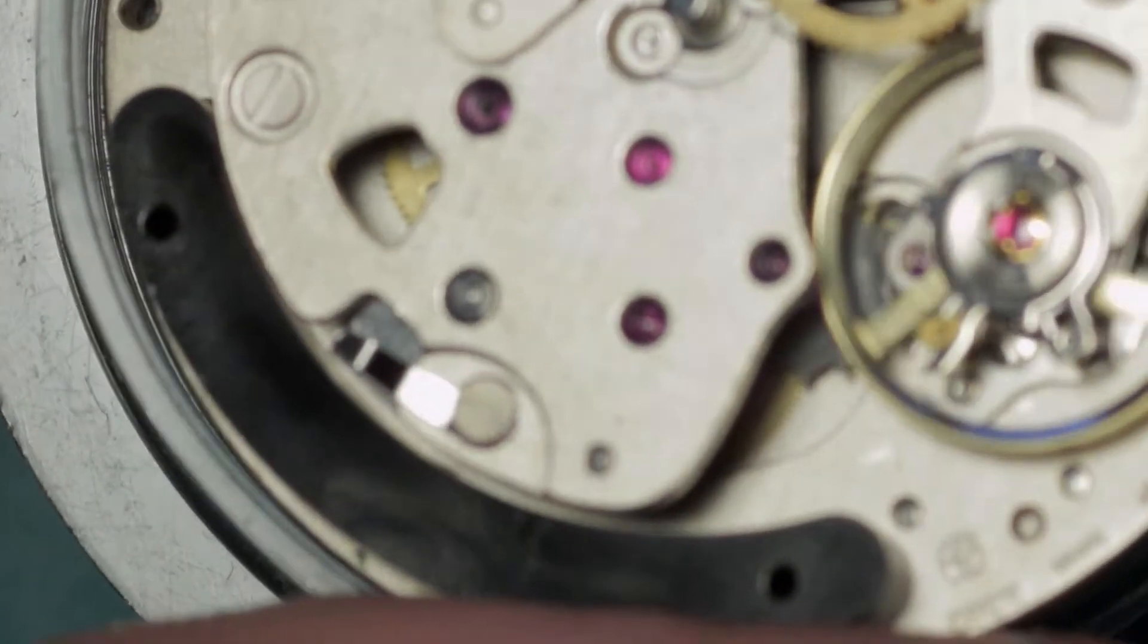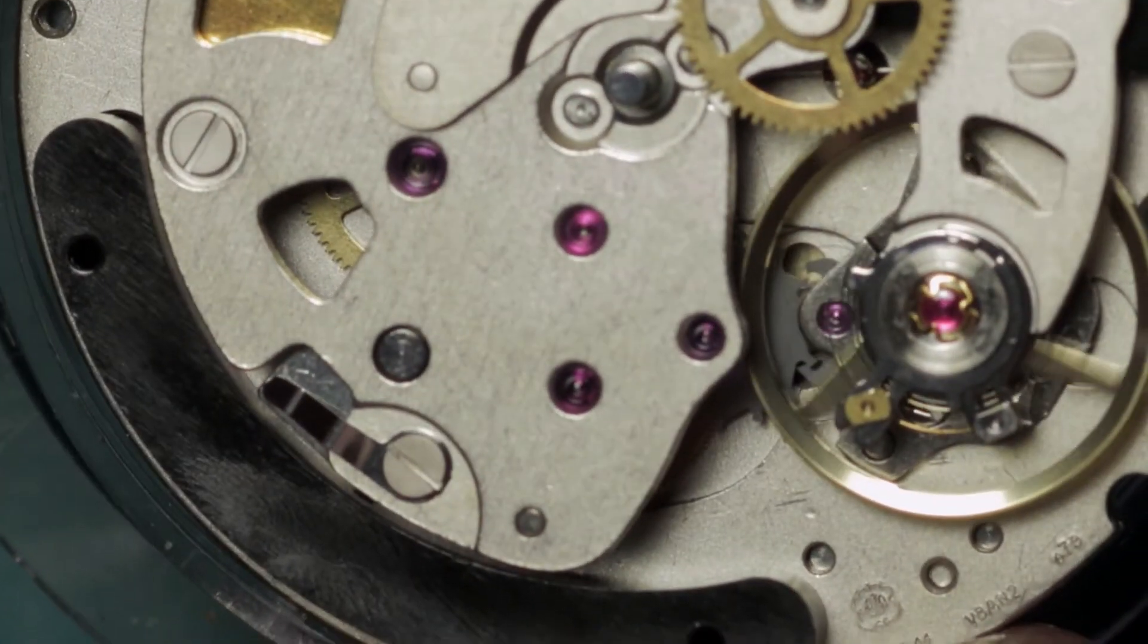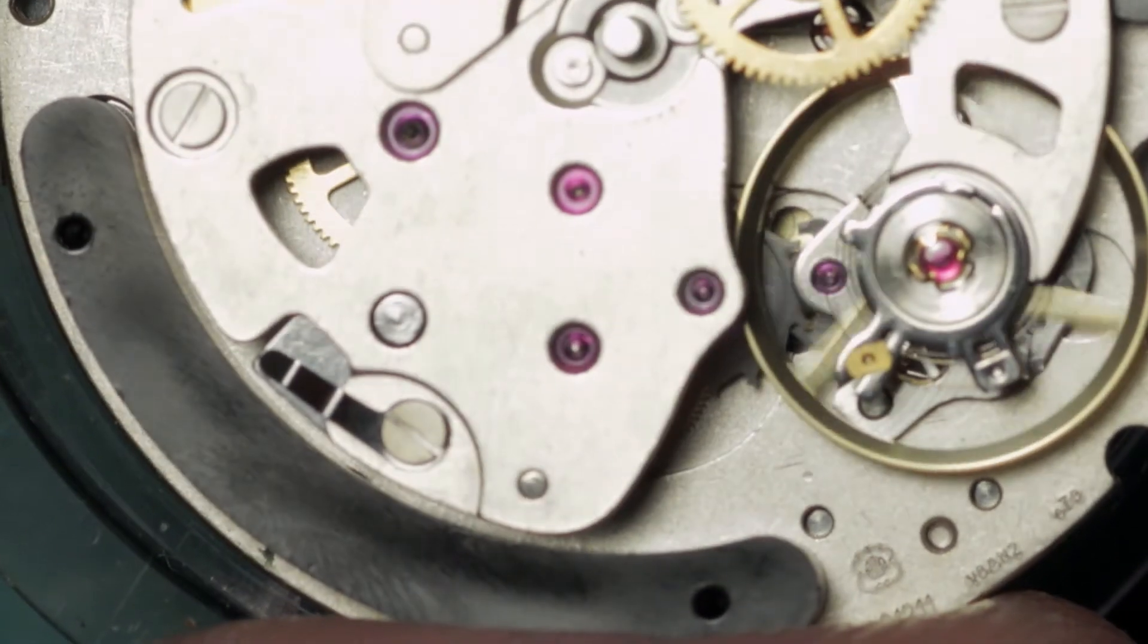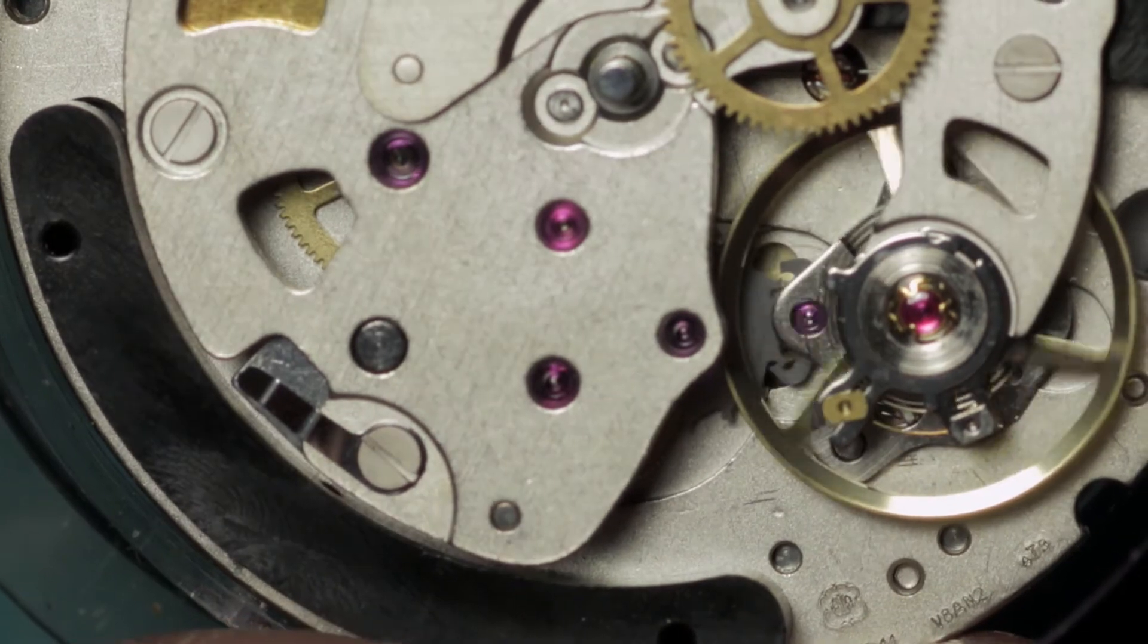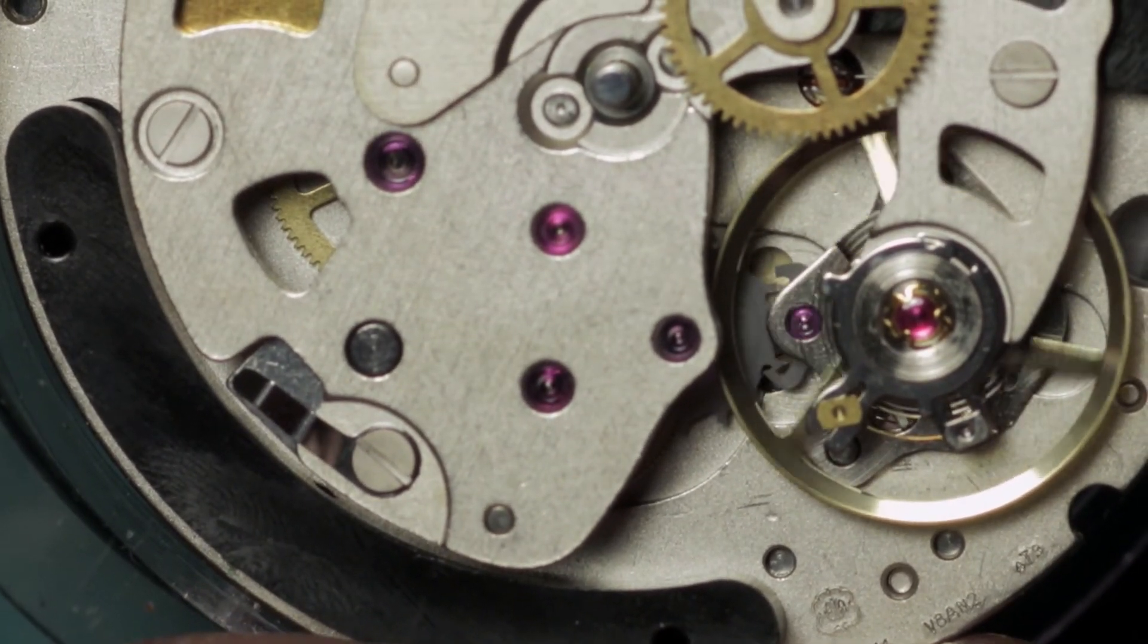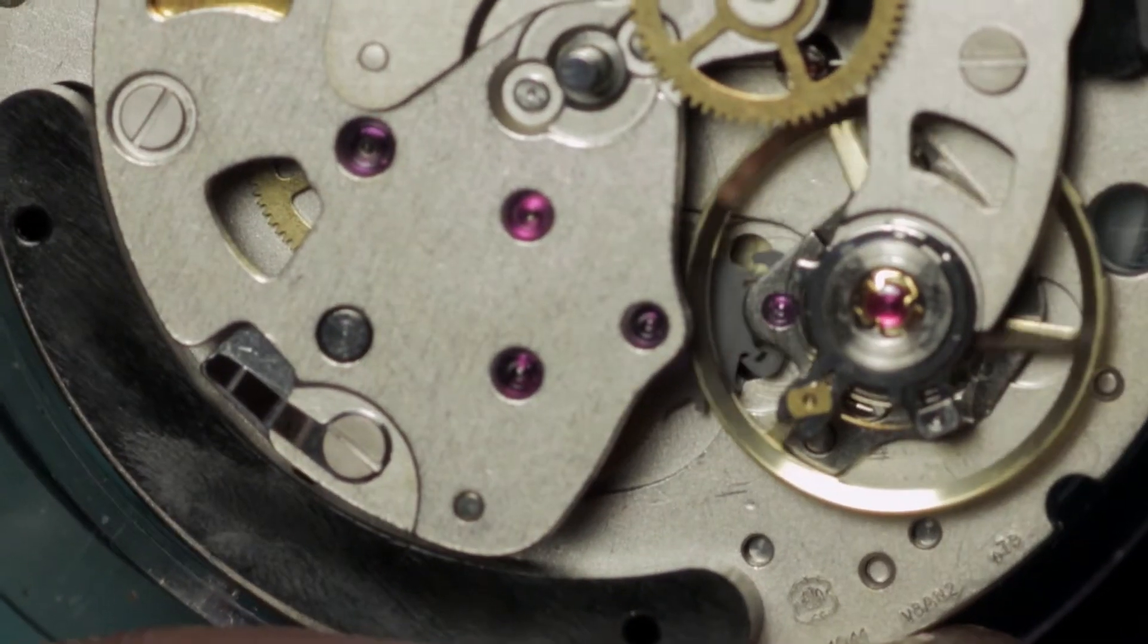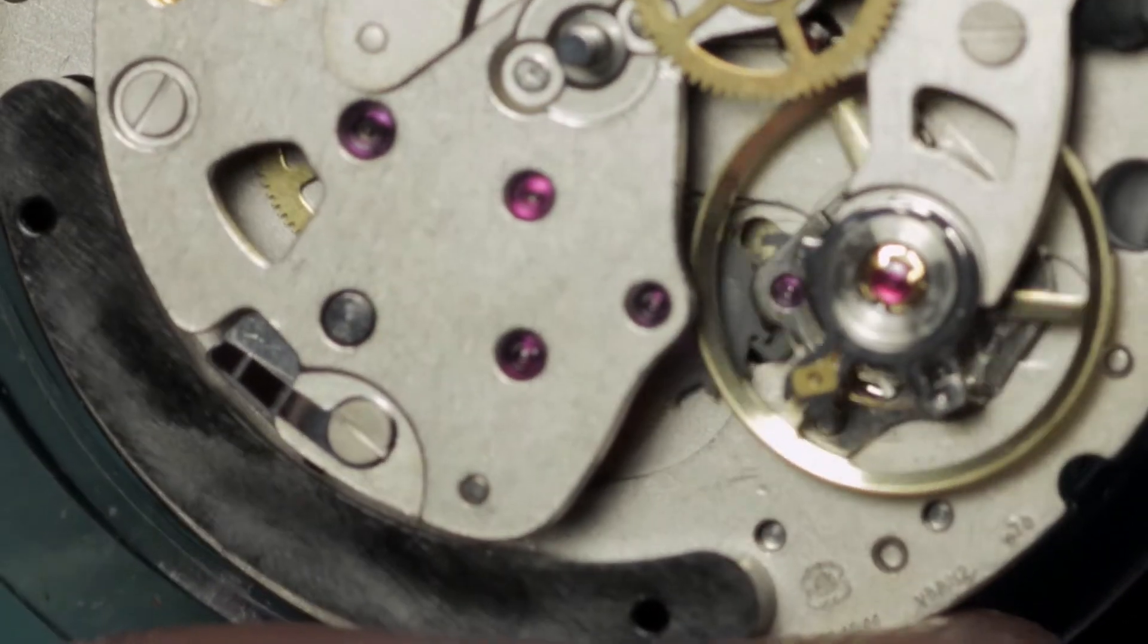And I can hopefully show you as well while I'm at that—hopefully show you or you can hopefully see—the plastic pallets. Yeah, a completely plastic pallet fork. The entire thing, it's just molded as one piece, and it works. It works incredibly well.